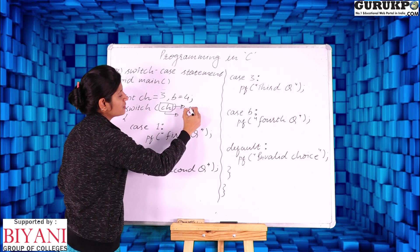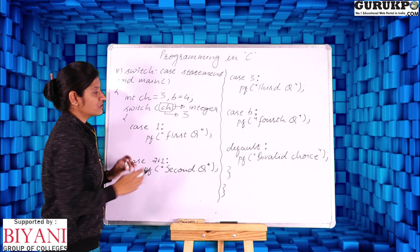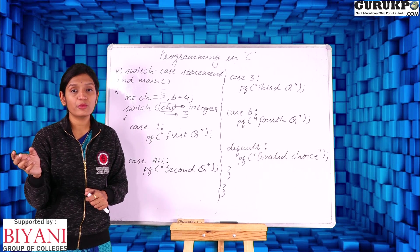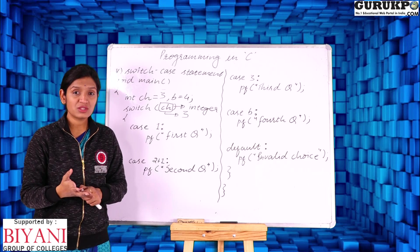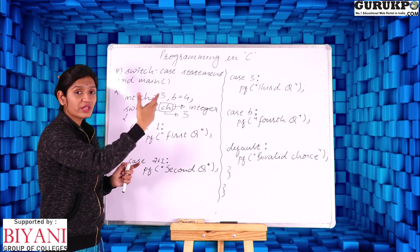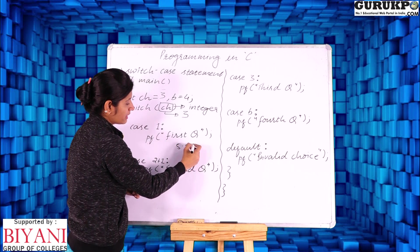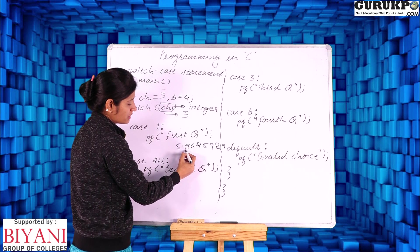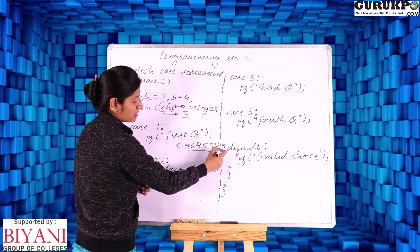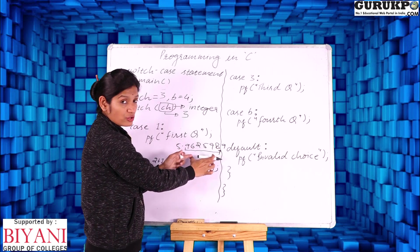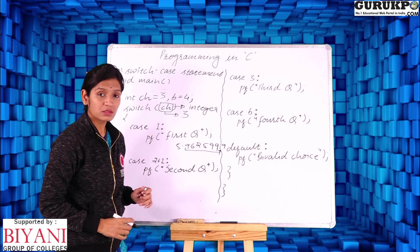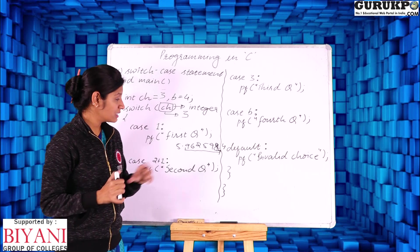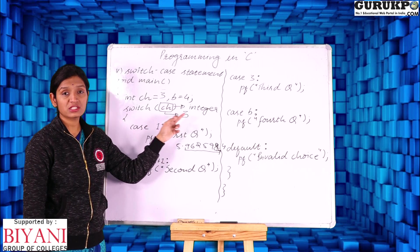There is also a restriction on the switch expression: it must be an integer expression. You cannot pass floating-point expressions, because floating-point values lack exact matches — they can be imprecise. For example, a value like 5.962598... may be rounded by the compiler, which supports only 6 significant digits of precision, so the stored value may differ from what you expect. Therefore floating-point expressions cannot be reliably matched in switch-case, and only integer expressions are allowed.